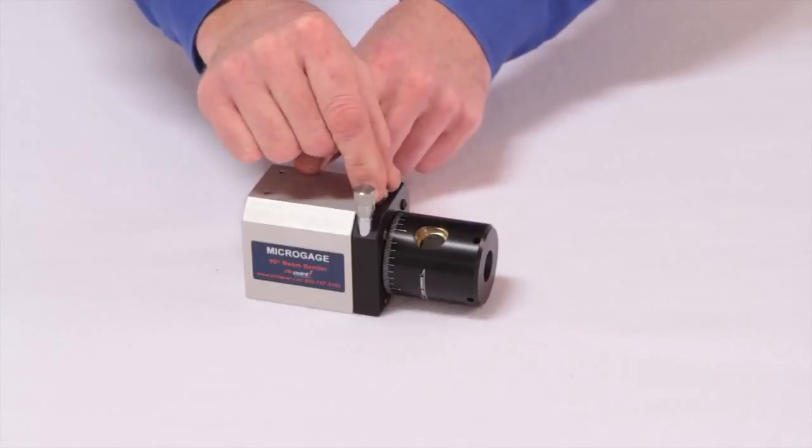A small locking screw engages a precision adjustment knob that allows you to accurately control the angular position of the exiting laser beam.